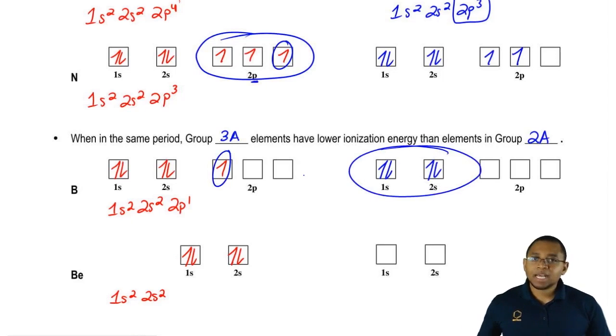Now, this is highly favored because everyone is paired up. Remember, you want to either be half filled if you're in P or D or totally filled if you're in P and D.